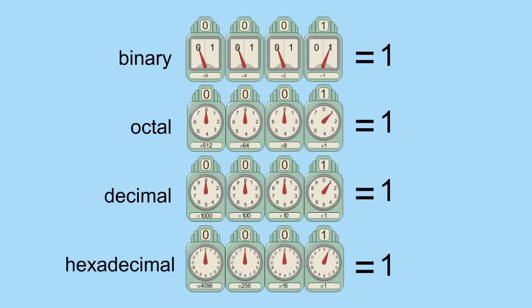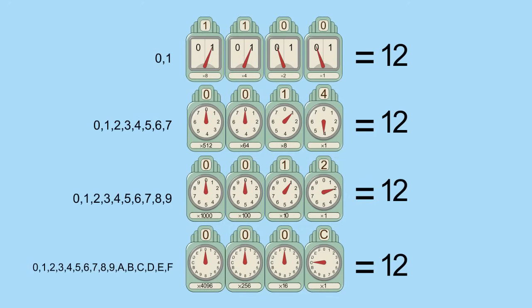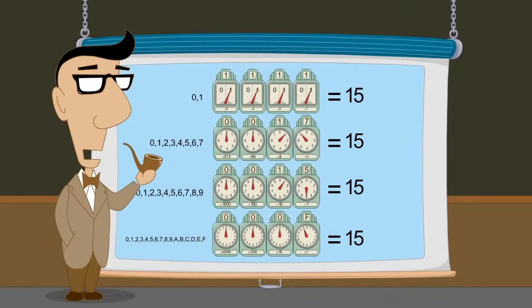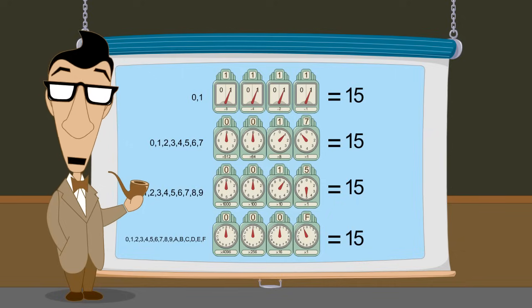As you have seen, we use the same basic rules for counting in binary, octal, decimal, and hexadecimal. The only difference is that each base has a different number of numeric symbols. So using positional notation, we can create a number system using any natural base we like. Try creating one of your own. Who knows, it might catch on.